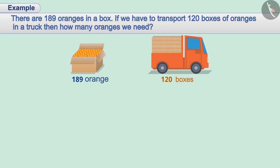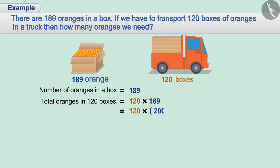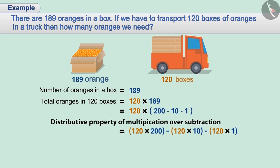In the given example, there are 189 oranges in a box. Then total oranges in 120 boxes is 120 multiplied by 189. How can we simplify this multiplication? We will express 189 as 200 minus 10 minus 1. By using distributive property of multiplication over subtraction, we can represent it as follows.